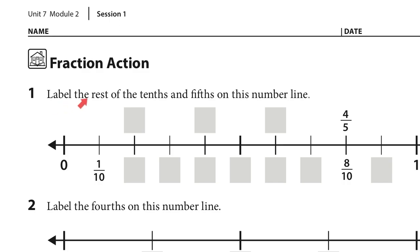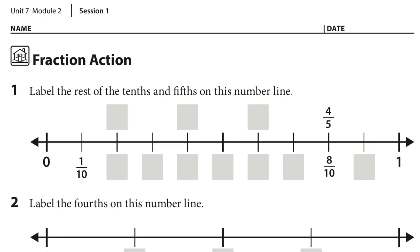We're going to start by labeling the rest of the tenths and fifths on this number line. I'd like to point out that we have tenths along the bottom — one-tenth, two-tenths, three-tenths, four-tenths, five-tenths — but then I have fifths along the top. There are fewer of them. Does that make sense? Why are there fewer boxes up top and more along the bottom? Could it be because fifths should only have five, and tenths should only have ten?